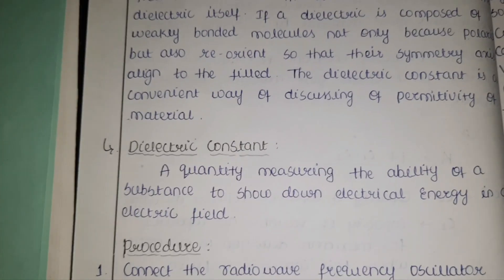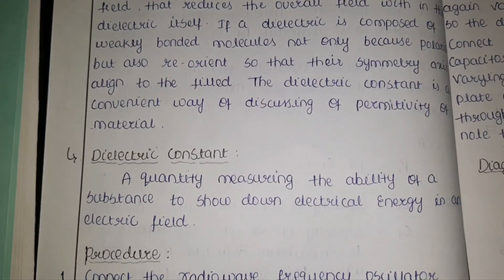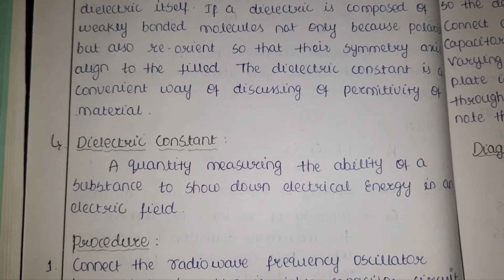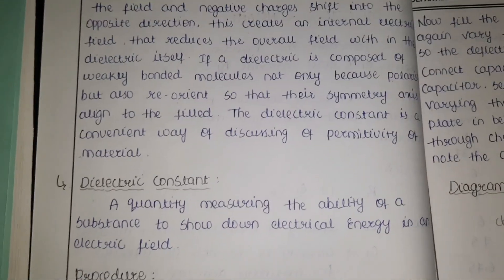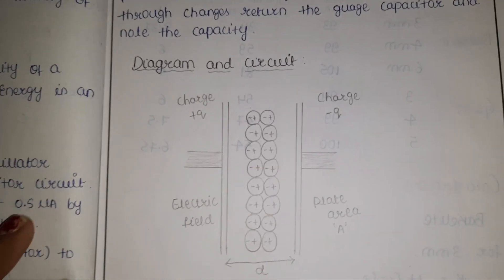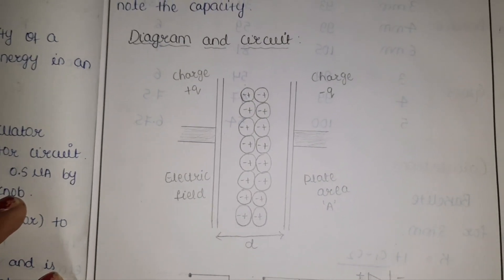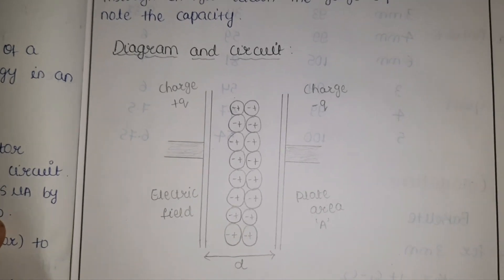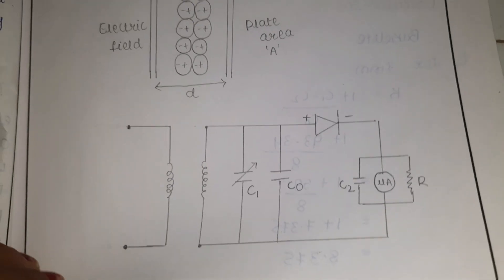Regarding theory: a dielectric material acts like an insulator. The dielectric constant is a quantity measuring the ability of a substance to slow down electrical energy in an electric field. This is the diagram for the dielectric material kept between two capacitors, and this is the circuit diagram as seen in the apparatus.